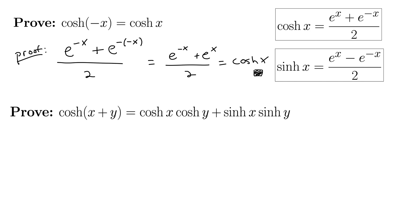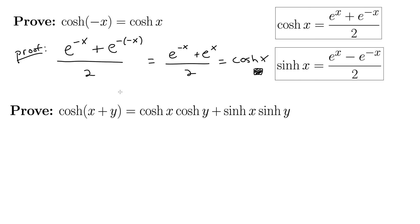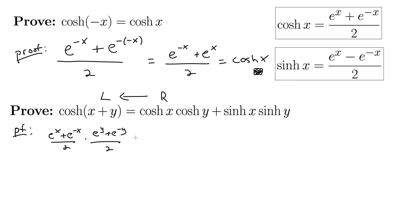Let's try another one. Here we're asked to prove that cosh of the quantity x plus y equals cosh x cosh y plus sinh x sinh y. Again, these are supposed to be fun, so really try to have a good time with these. It's going to be pretty hard proving this going from left to right, so it's going to be a lot easier starting with the right-hand side and working our way to the left.